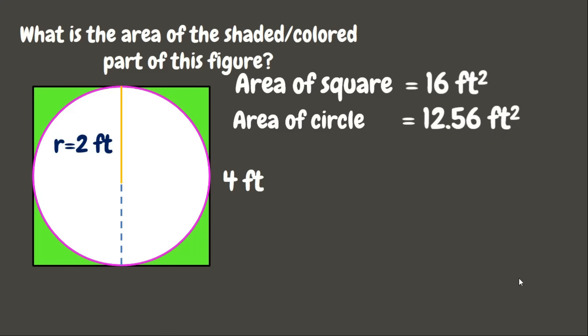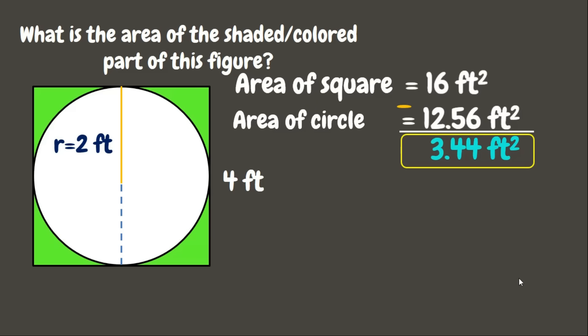Since we need to find only the area of the shaded green part, instead of adding the areas together we will subtract. We subtract 12.56 from 16: 16 minus 12.56 equals 3.44 square feet. Therefore, 3.44 square feet is the area of the colored or shaded part of this figure.